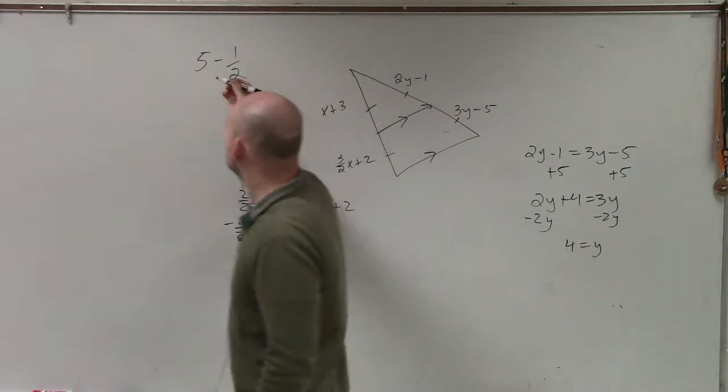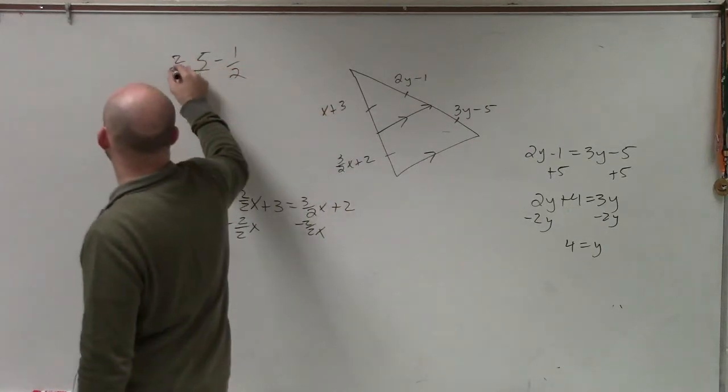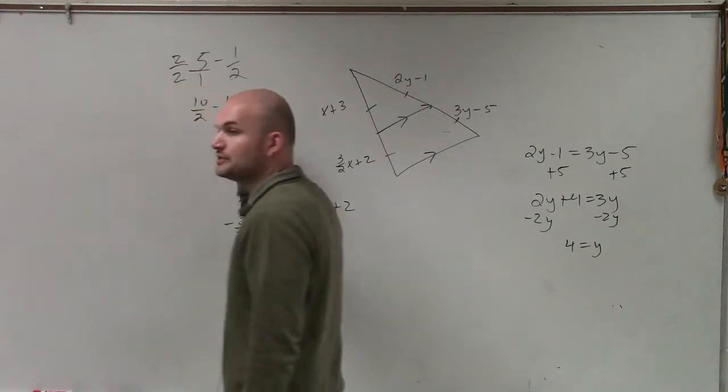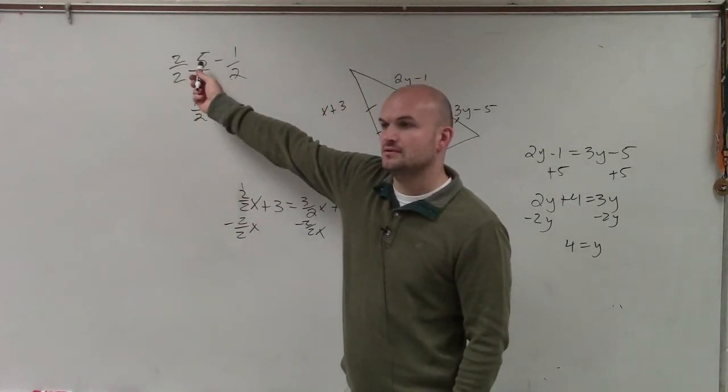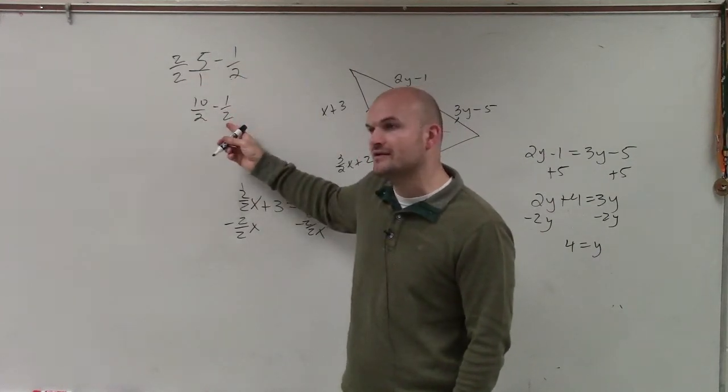So you've got to write it with the denominator of 2. So what you do is you multiply 2 over 2, which is 10 over 2 minus 1 half. Now you can subtract them, right? Is 10 divided by 2 the same thing as 5? Yes, but it's written as a fraction with the same denominator that you can subtract from 1 half.